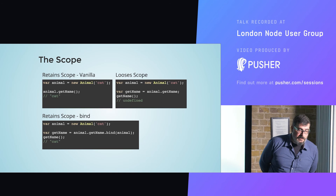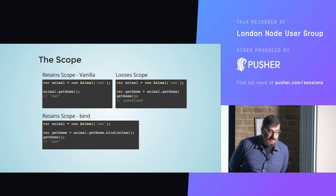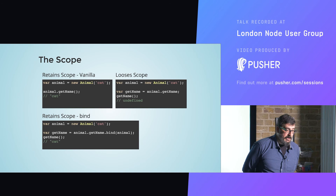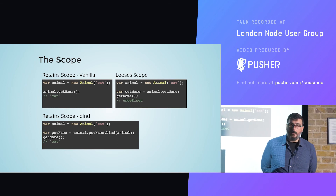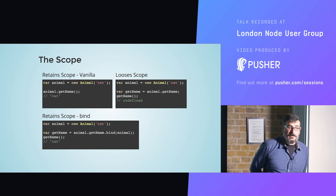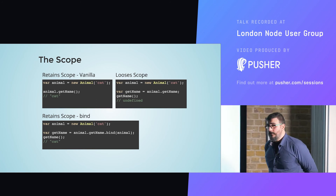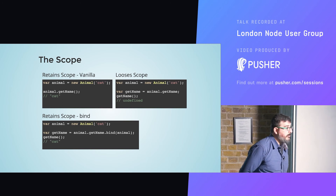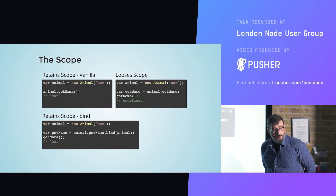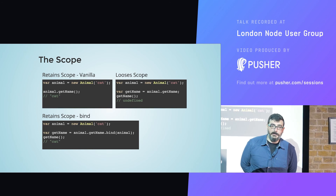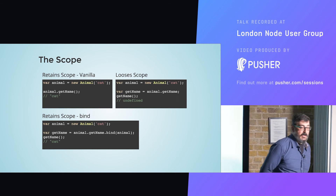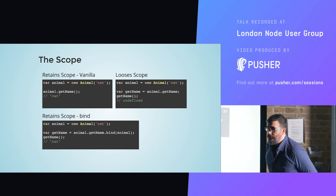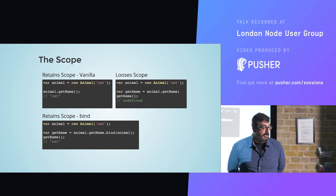var animal = new Animal('cat') — so now the name of our instance is 'cat'. We say animal.getName() and we get 'cat' in return. But if we assign the method into a new variable, losing the context of animal, and then invoke that variable, the context is lost and we get undefined. What we need to do is use the keyword bind, which encapsulates our function within the provided context and returns the encapsulated function unexecuted so we can execute it and get the proper response.